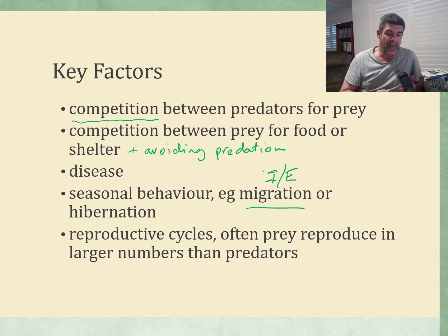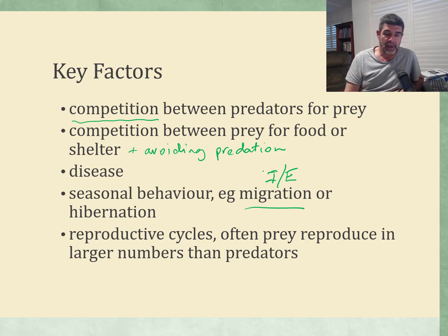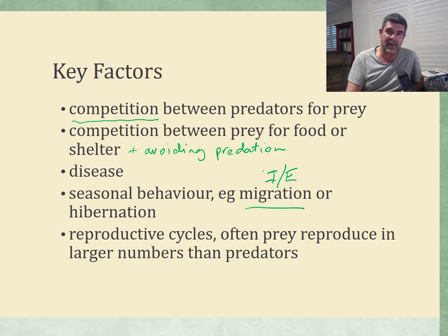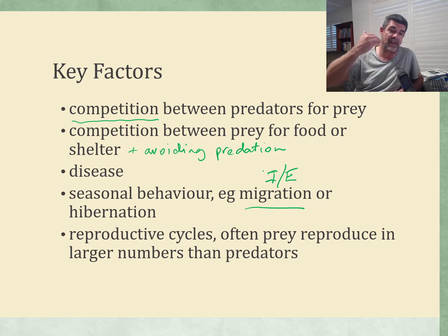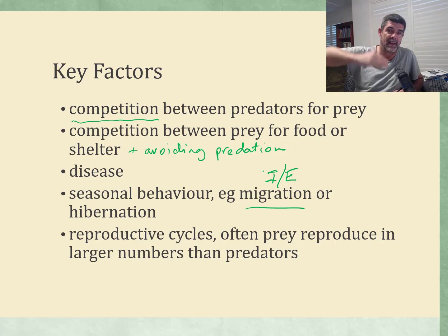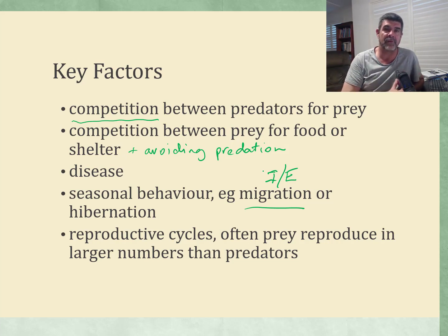If you think about it, a predator needs to eat prey animals repeatedly throughout its life. So the number of prey needed to sustain a predator population is much greater than the actual number of predators. This explains why prey numbers on those graphs are always much higher than predators. If they're not, you get a very massive drop very quickly in predator numbers because there's just not enough food to go around.